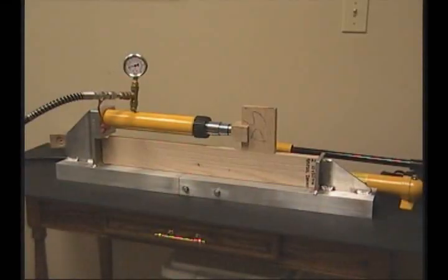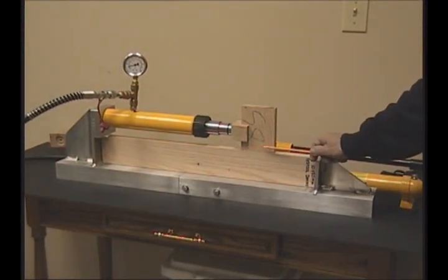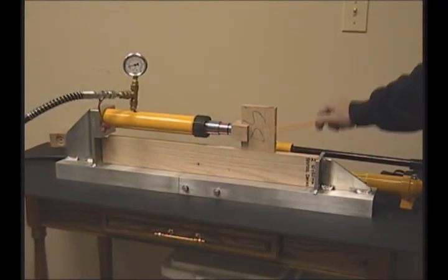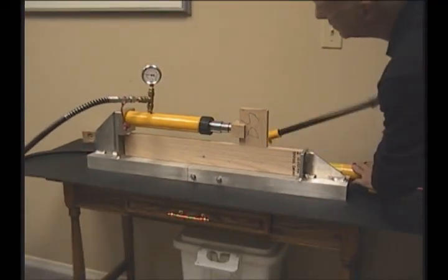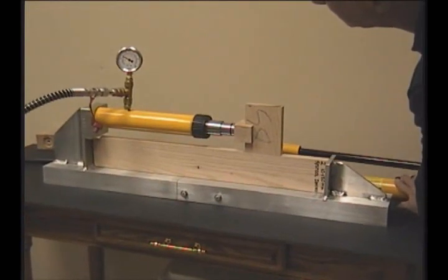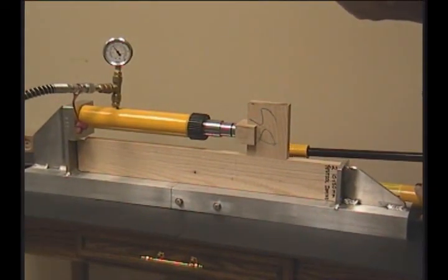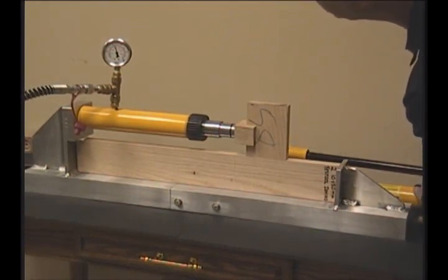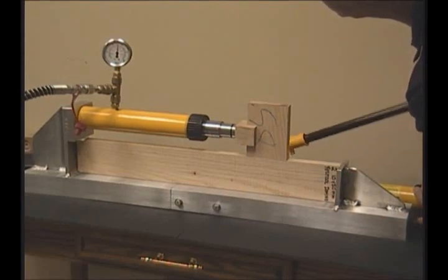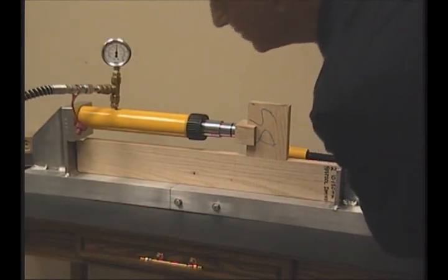The next test is a Festool domino, a double unit with two plates inserted in a 1x4, again, of red oak. 200, 300, 400, 500, 560.